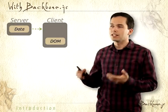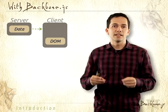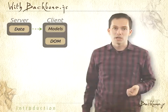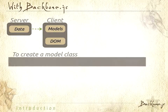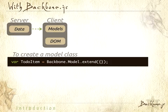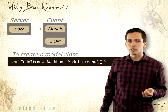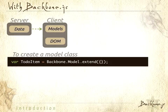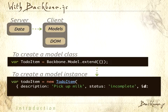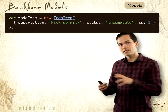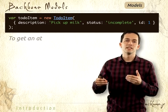Here is our server and our client — our client's a browser — and we're going to add another layer inside called our model. So let's create our first model class. It's going to be called TodoItem, and it's going to extend from the Backbone Model base class. Pay close attention to the capitalization — we capitalize the first letter of each word when declaring a class. Now let's create a model instance from our class called todoItem, sending in a JSON object for the attributes. Notice the capitalization: the first letter of the first word is lower-cased.